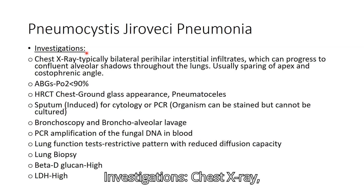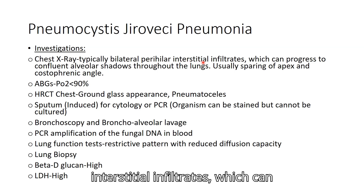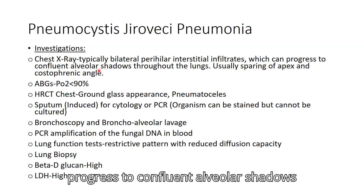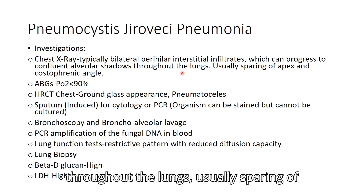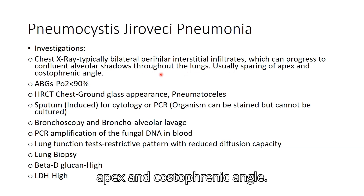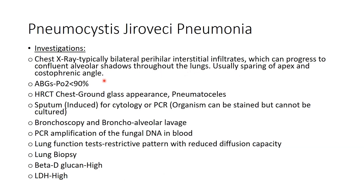Investigations: Chest X-ray typically shows bilateral perihilar interstitial infiltrates, which can progress to confluent alveolar shadows throughout the lungs, usually with sparing of the apex and costophrenic angle.